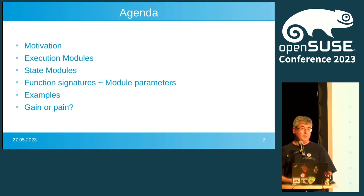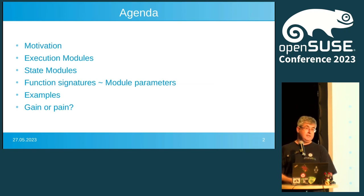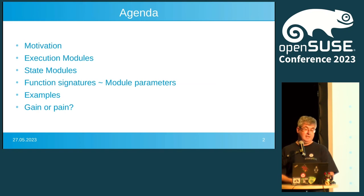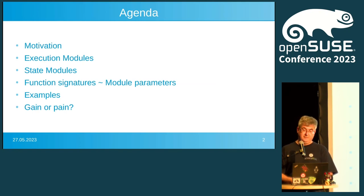We will look at the two kinds we had to implement: execution modules and state modules. We'll see that the function signatures represent the module parameters, we'll have some examples, and at the end we'll talk about gain or pain — was it worth what we did?